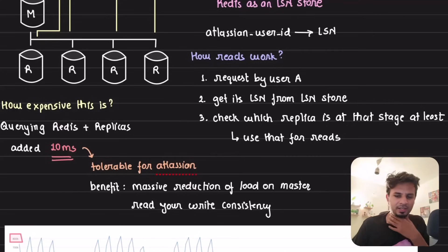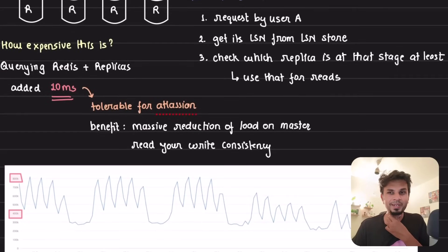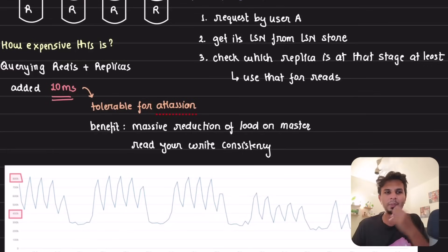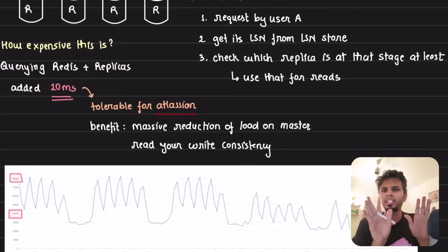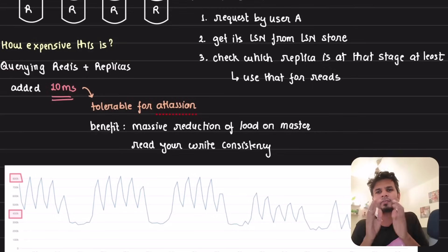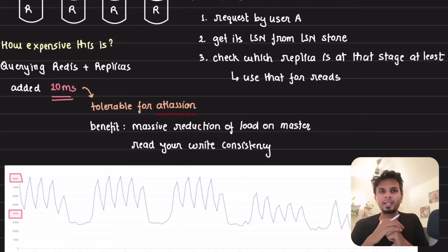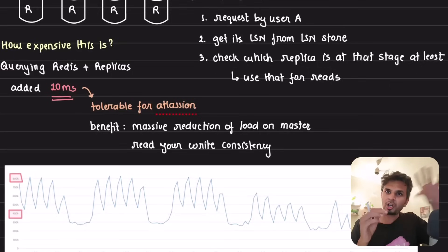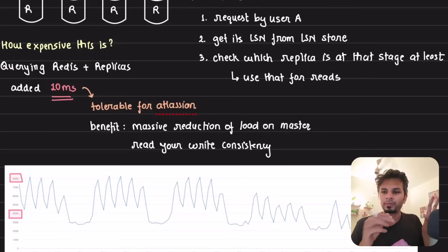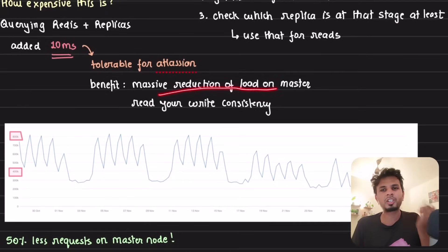This is one of the easiest ways to implement read-your-write consistency without routing all requests through master. How expensive is it? Surprisingly, not very. For every request you make one query to Redis to get the LSN number, and then one query per replica to check if it's caught up. Doing them in parallel across four or five replicas, the overall overhead Bitbucket got was about 10 milliseconds — tolerable for Atlassian.